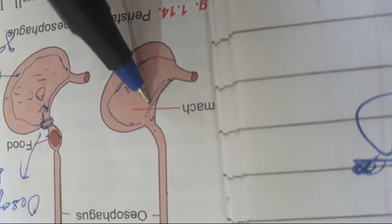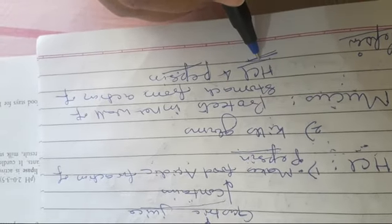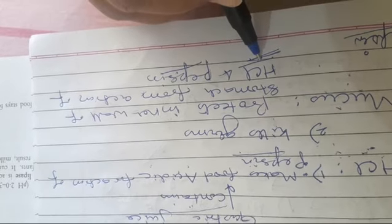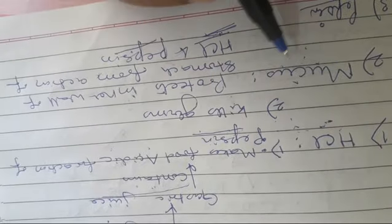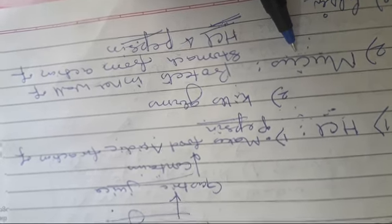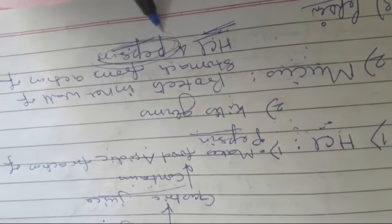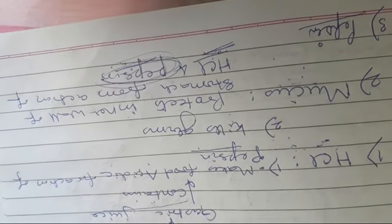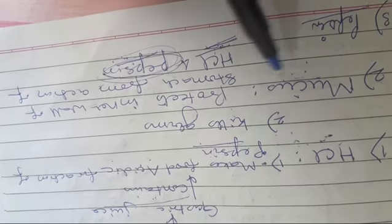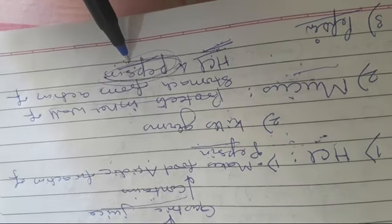The next important component of gastric juice is mucus. Mucus lines the inner wall of the stomach with a thick coating. This protects the inner wall from the corrosive action of hydrochloric acid, which, being an acid, could otherwise burn the stomach wall. Mucus also protects the inner wall from the action of pepsin, since the stomach wall is made of protein-containing tissues that pepsin could otherwise digest.